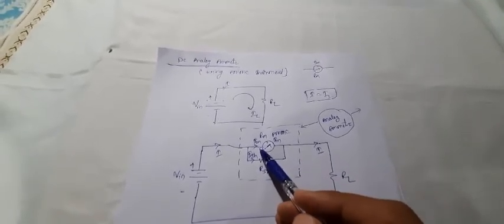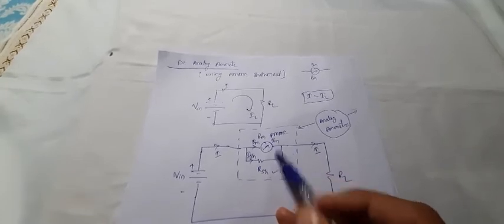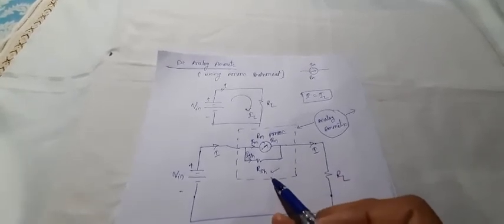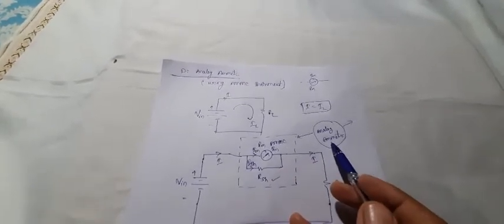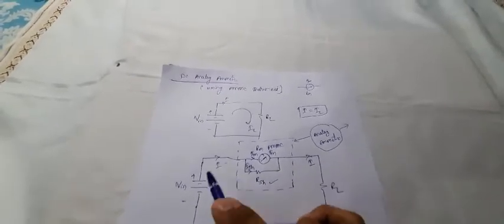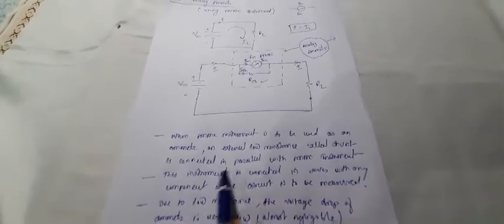IM is the full scale deflection current, RM is the coil resistance, RSH is the shunt resistance with a very small value, and ISH is the current passing through RSH. The PMMC in parallel with a very small value shunt resistance is known as an analog ammeter. When a PMMC instrument is to be used as an ammeter, an external low resistance called shunt resistance is connected in parallel with the PMMC instrument.